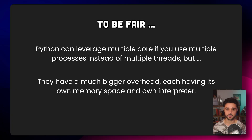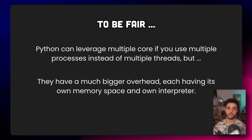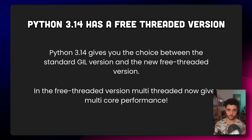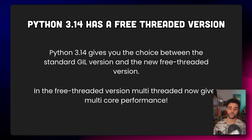To be fair, Python does have a way to leverage multicore performance, but it's not with multithreading — it's called multiprocessing, where you spawn multiple processes. The problem is that those processes have a much bigger overhead compared to threads, as they each have their own separate memory space and their own interpreter. And that's how Python 3.14 comes to help us, because it has two versions: the standard version with the GIL, and the free-threaded version that comes without the GIL at all. Using the free-threaded version, you get multicore performance with multithreading and don't have to use multiprocessing.